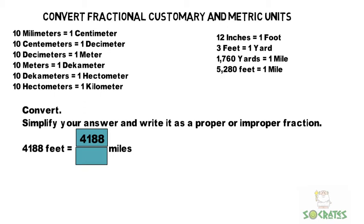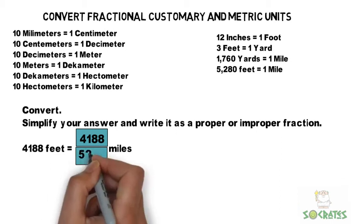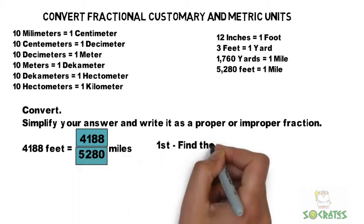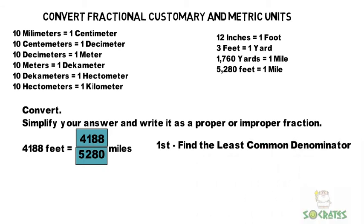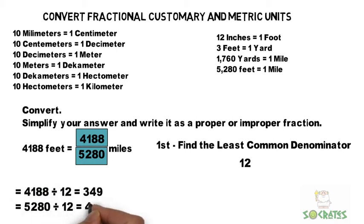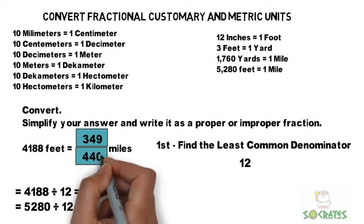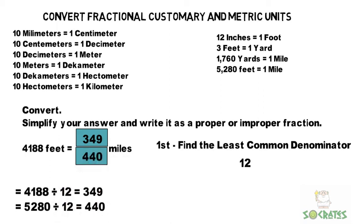So 4,188 over 5,280 feet in a mile. So then we're going to first find the least common denominator, and for this problem when looking at 4,188 and 5,280, it is 12. So then we're going to divide each number by 12 and then we get the answer 349 and 440.